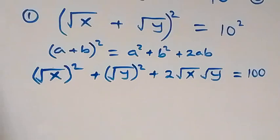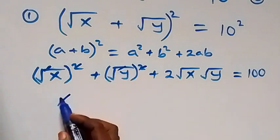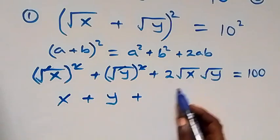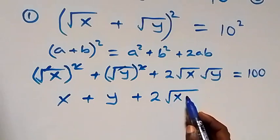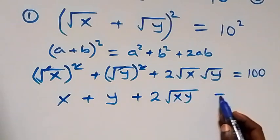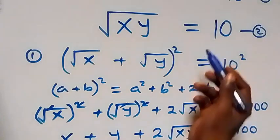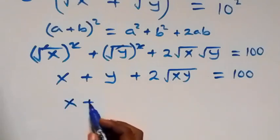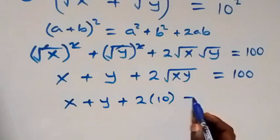When we simplify, the square cancels the square root, so we have x + y + 2·√(xy) = 100. From equation 2, √(xy) is given to be 10.